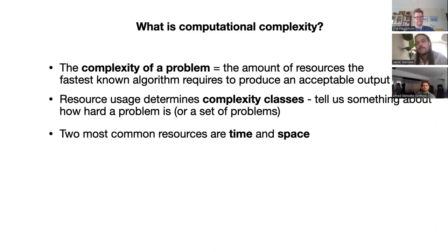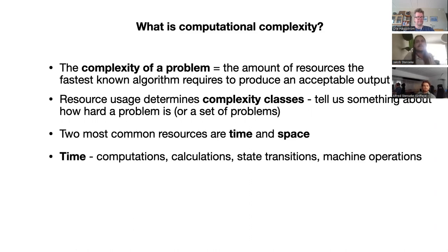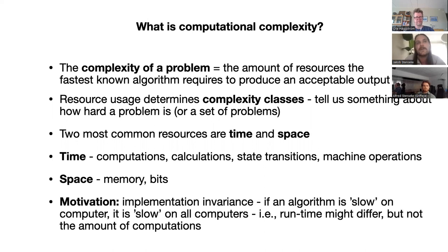The complexity of a problem is the amount of resources the fastest known algorithm requires to produce an acceptable output. This resource usage determines complexity classes, which tell us something about how hard a problem is. The two most common resources for computers are time — computations, calculations, state transitions — and space, the amount of memory you need. The motivation is implementation invariance: if the fastest known algorithm for a certain problem is slow on one computer, it is slow on all computers.